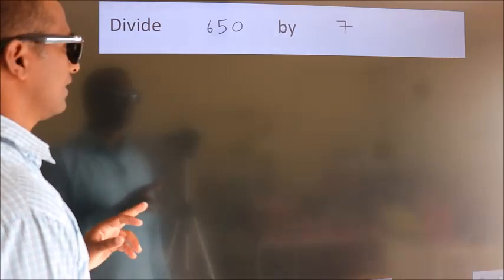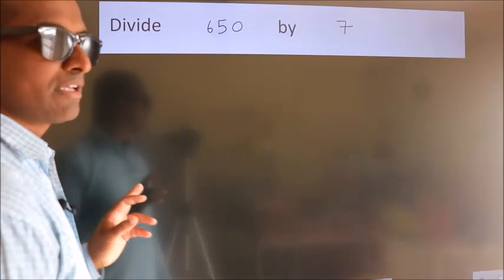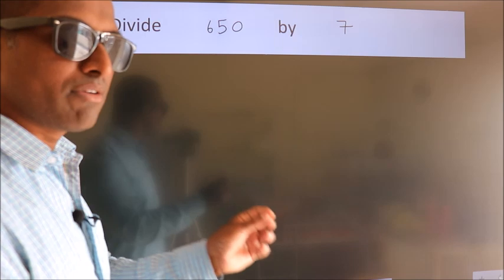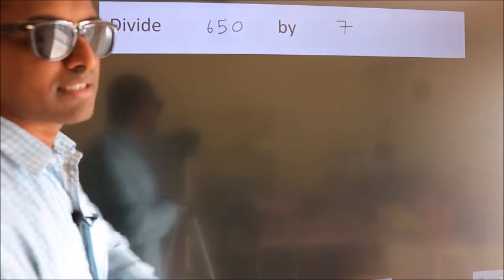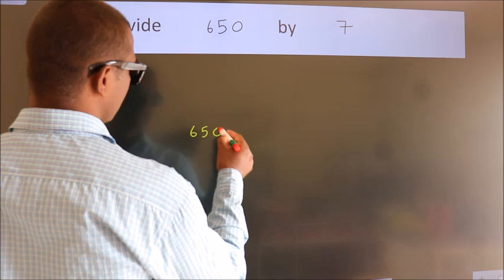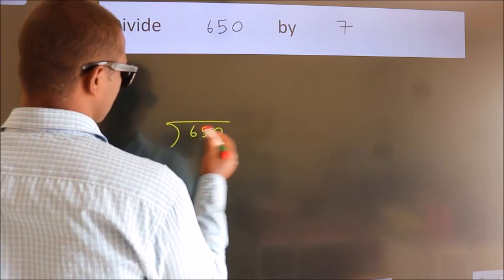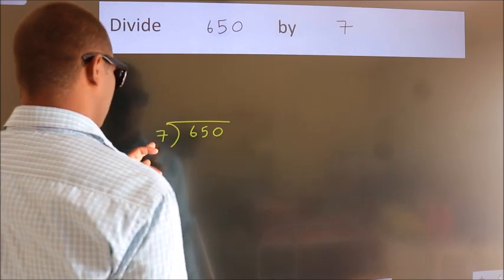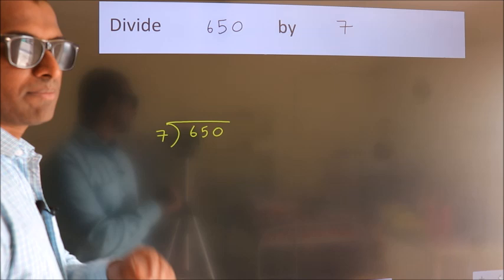Divide 650 by 7. To do this division, we should frame it in this way. 650 here, 7 here. This is your step 1.